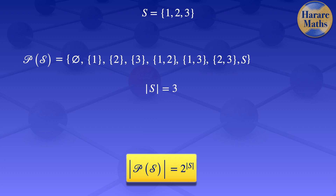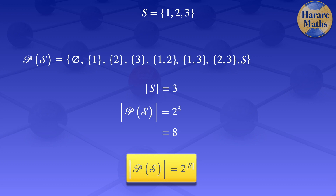Using that formula, the cardinality of the power set of S is 2 to the power 3, and 2 to the power 3 gives us 8. So the formula gave us the same result as when we counted the elements one by one.